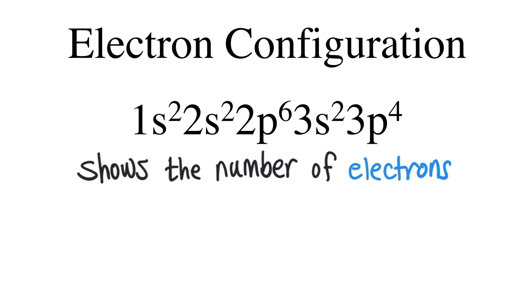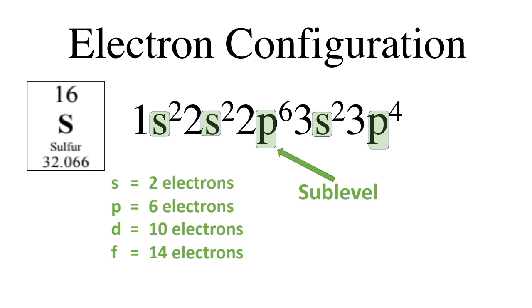An electron configuration shows the number of electrons in each sublevel. The sublevels are represented by a letter. The S sublevel can hold a max of 2 electrons, the P can hold 6, the D can hold 10, and the F can hold 14 electrons.